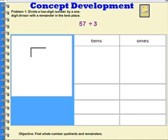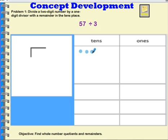We'll begin by dividing a two-digit number by a one-digit divisor with a remainder in the tens place. We're going to take 57 and divide it into three groups. I'm going to begin by using my place value chart. I will represent 57 with five tens and seven ones.